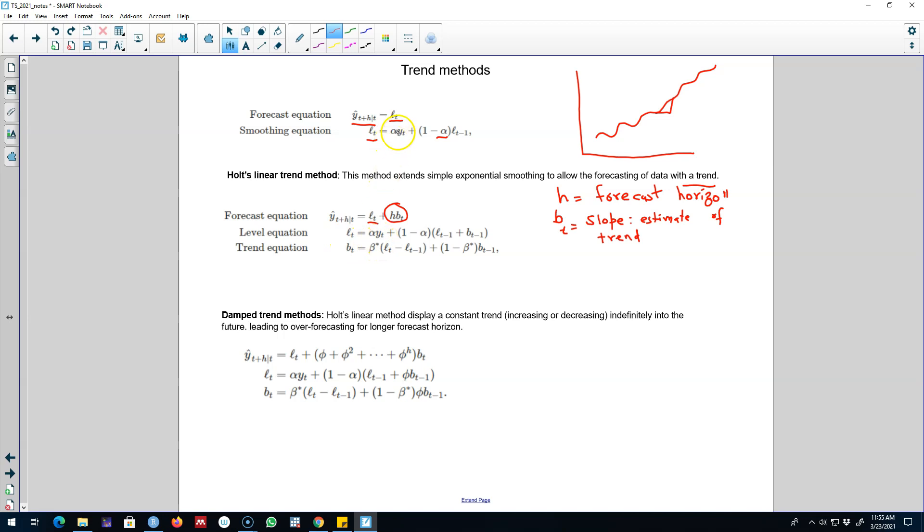And then our level equation will again depend on alpha*yt as it was in the previous case, and the previous level of the initial state. And in addition, we'll include the value of slope in the previous period in this level equation.